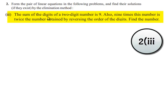Coming to the third bit, the sum of the digits of a two-digit number is 9. Also, 9 times this number is twice the number obtained by reversing the order of the digits. Find the number.